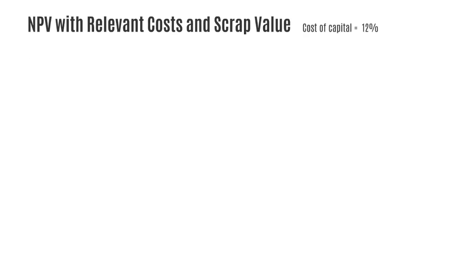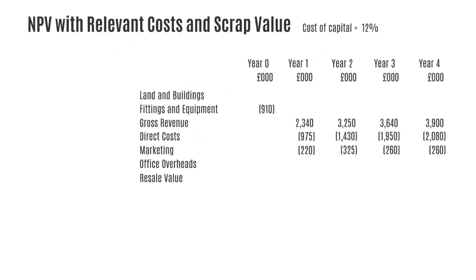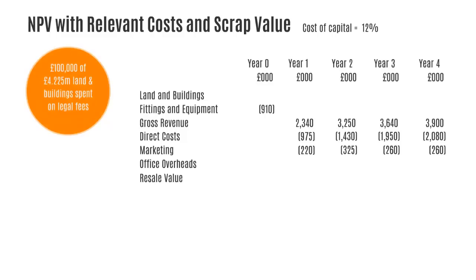The cost of capital is again 12% and we start with a basic pro forma. Some figures have no values yet, which means we need extra information to find them. Firstly, we're told that the cost of land and buildings includes £100,000 which has been spent on legal fees. Legal fees are a sunk cost because they've already happened — Buzzing Batteries are going to incur this £100,000 whether or not the project happens. So we need to reduce the land and building cost by £100,000, from £4.225 million to £4.125 million, and pop that into our pro forma.